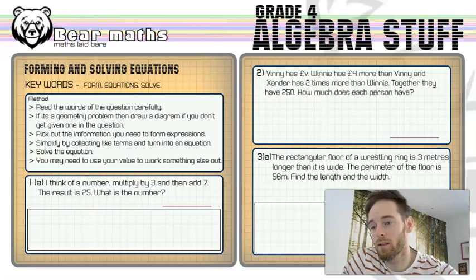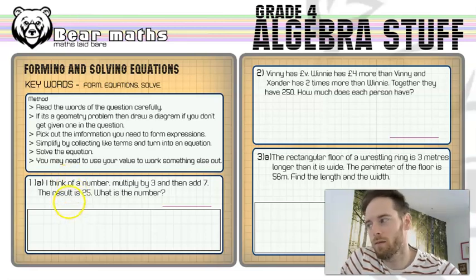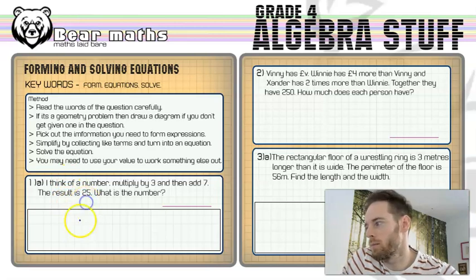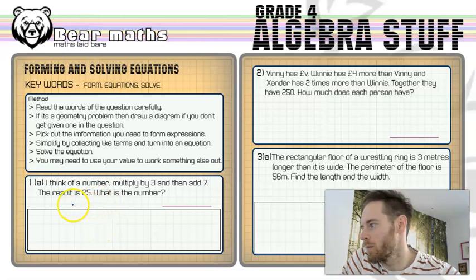Now in number 1a, I think of a number, I'm thinking of a number, I'm multiplying that number by 3 and then I'm adding 7. The result is 25. So you've got to figure out what the number is. Now I've got a little bit of working out space down here. I've got another question under here which I'll reveal in a bit. But yes, here we go. This is what we would need to do in this particular question.